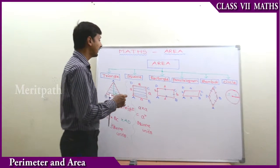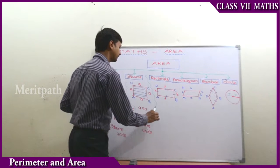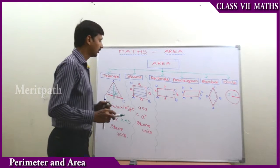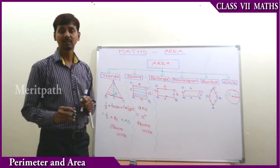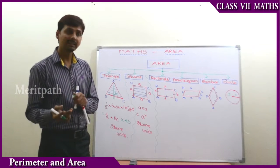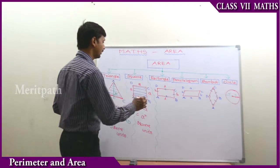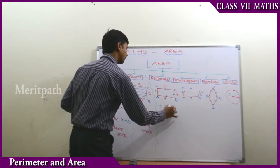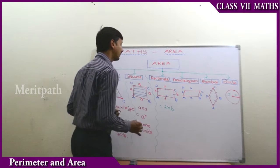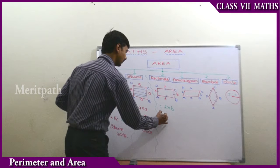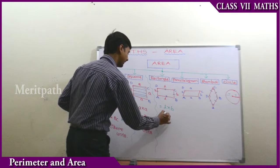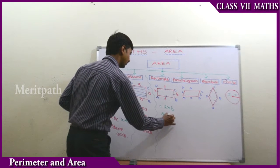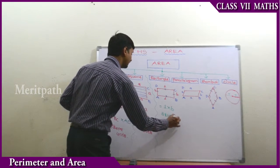Let's go to the next one — rectangle. The area of a rectangle is the product of length and breadth — length times breadth. The unit is square units, same as before.